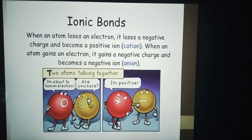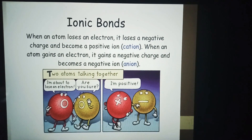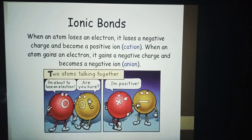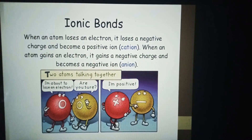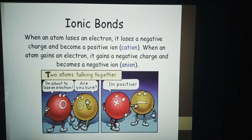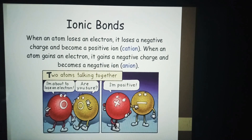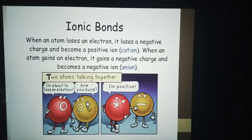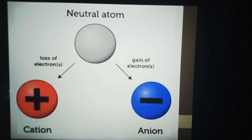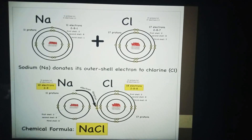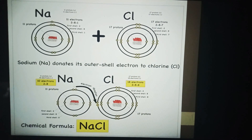Here two atoms are illustrated talking together. The first one is saying it is about to lose an electron, and the second one is asking if it is sure. After losing that electron, the first atom becomes positive. So: loss of electron makes a cation, and gain of electron makes an anion.